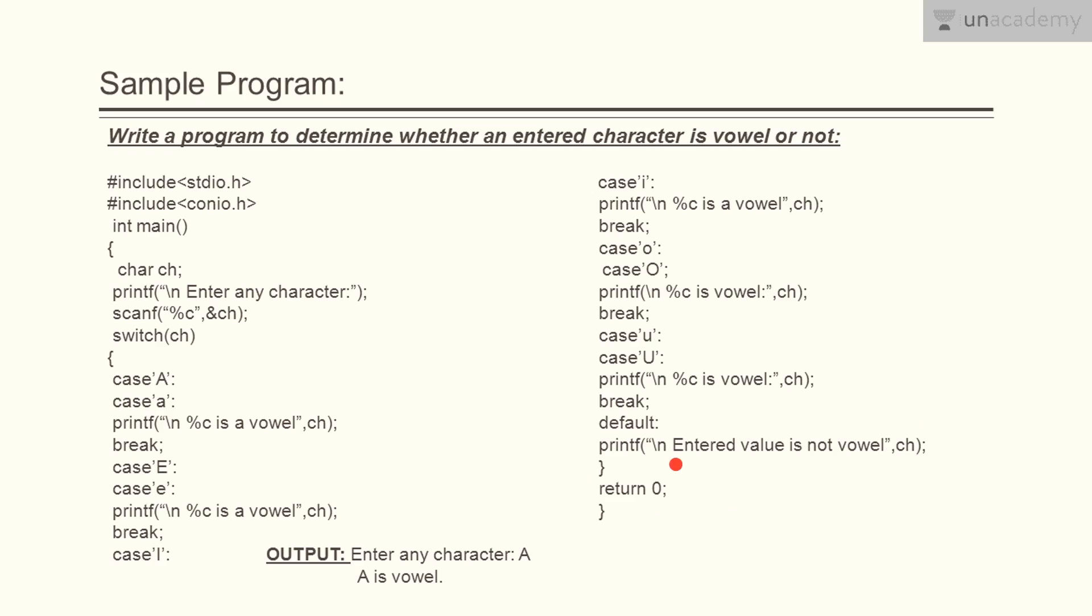And return 0 will terminate the program. So this is the output which tells enter any character so we entered here a so this gives a is a vowel.